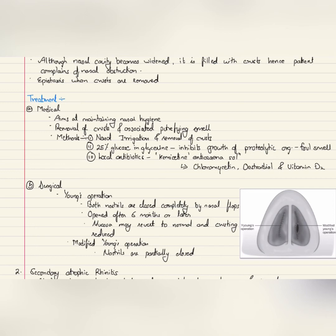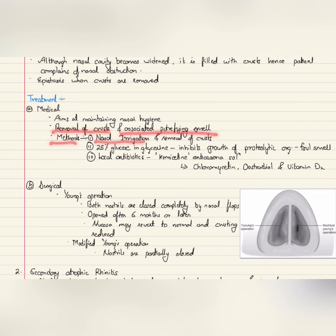Coming on to the treatment of primary atrophic rhinitis, we have medical treatment and surgical treatment. Medical treatment mainly aims at maintaining nasal hygiene rather than treating the disease. It includes removal of crusts and associated putrefying smell. Nasal irrigation can be done with warm normal saline or an alkaline solution made of sodium bicarbonate, sodium biborate, and sodium chloride.